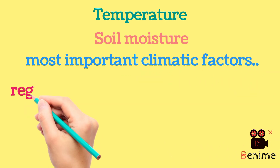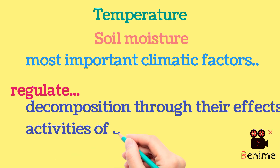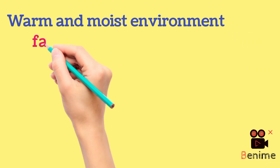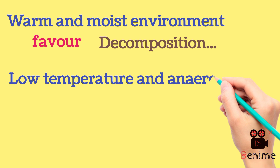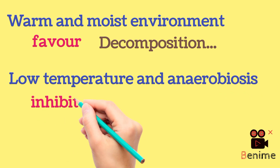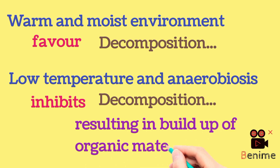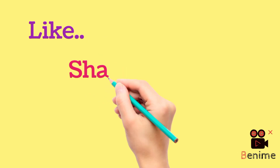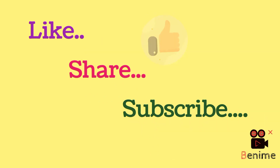Temperature and soil moisture are the most important climatic factors that regulate decomposition through their effects on the activities of soil microbes. Warm and moist environments favor decomposition, whereas low temperature and anaerobiosis inhibit decomposition, resulting in build-up of organic material. If you find this video informative, like it, share with your friends, and subscribe to the channel.